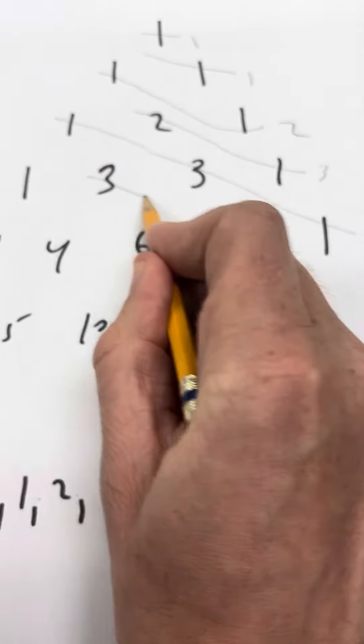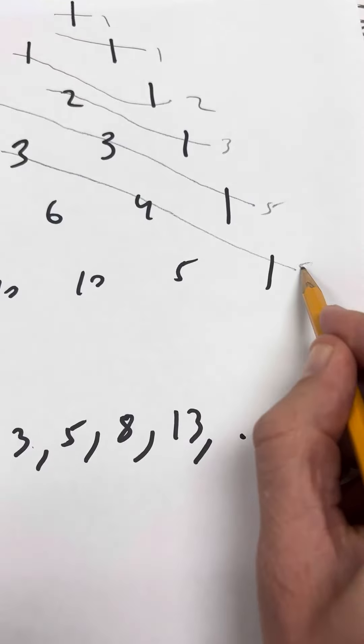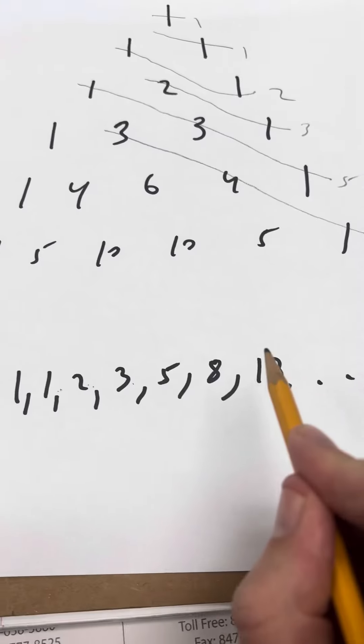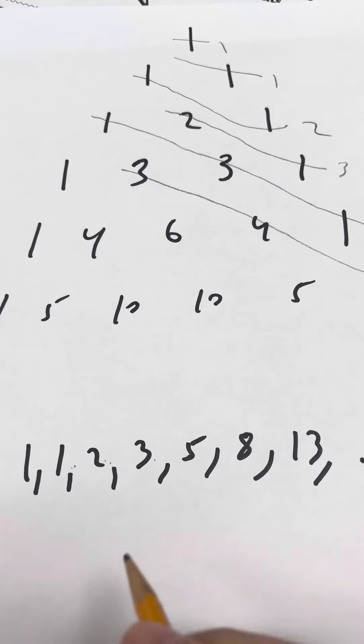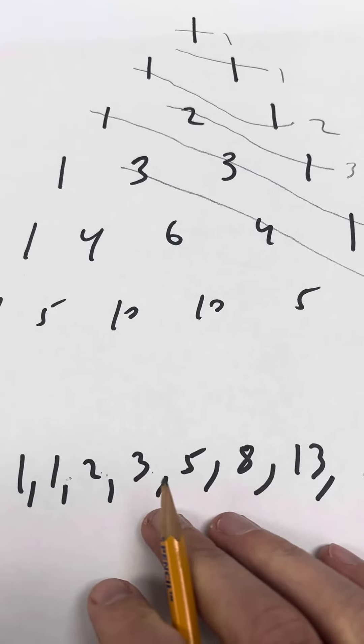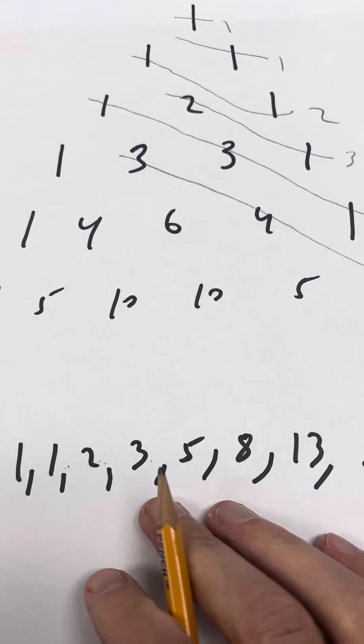Where's the 8? Right here. 3 plus 4 is 7, plus 1 is 8, and so on. So mysteriously, the Fibonacci sequence actually appears in Pascal's Triangle, which is pretty cool. Just another amazing thing about Pascal's Triangle.